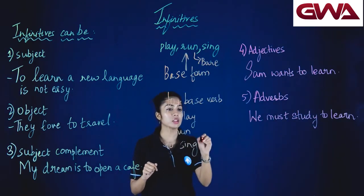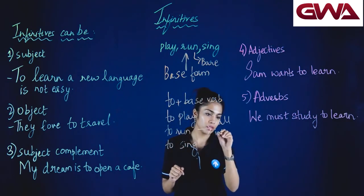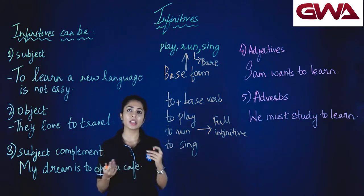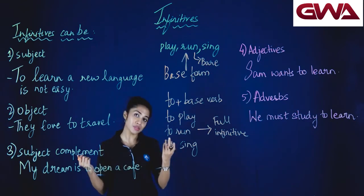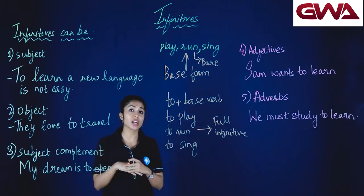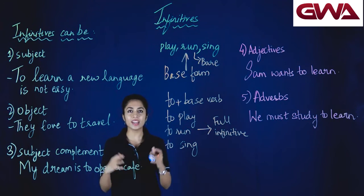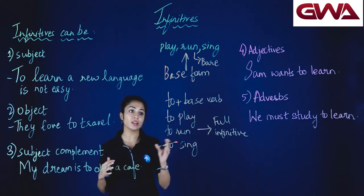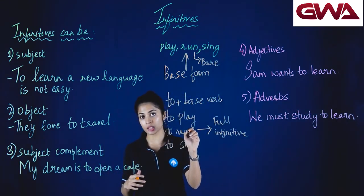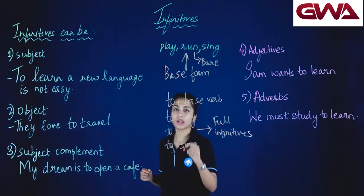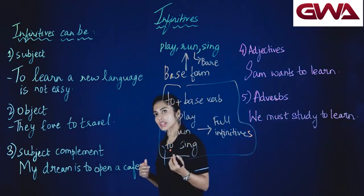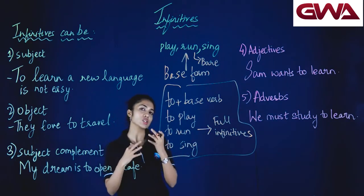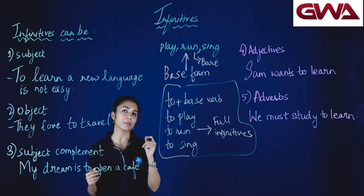जभी infinitives 'to' के साथ इस्तमाल किये जाते हैं, तभी हम उन्हें कहते हैं full infinitives। तो bare infinitives are basically the base form of the verbs — like play, run, sing, dance — when used without 'to,' they are known as bare infinitives। जभी भी हम infinitives का इस्तमाल करते हैं, उन्हें हम 'to' के साथ इस्तमाल करते हैं — to plus base form — and that is normally how they are used। I want you guys to know this because अगर आपको यह पता चल गया, तो आप easily infinitives identify कर पाएँगे।